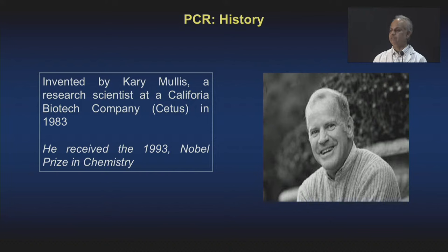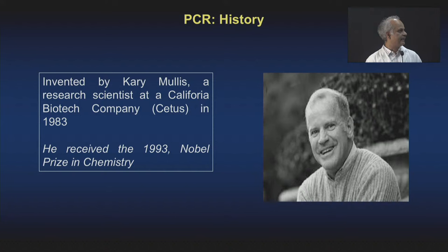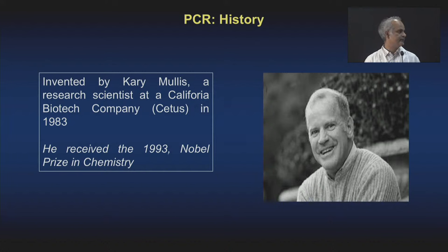PCR was invented by Kary Mullis, which was a revolution — molecular biology has changed after this particular invention. It's very difficult to imagine a protocol without doing a PCR first, more so in genomics-based work. He was a scientist at Cetus and it was invented in 1983. He received the 1993 Nobel Prize for this discovery in chemistry.